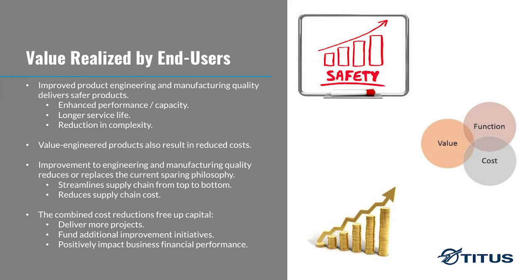For the last piece, talking about the value realized by end users — the number one thing is safety. When you have products that are properly engineered and manufactured under a rigorous QA system, the end result is products that are safer. You're going to have less uncertainty and fewer concerns, because some of this equipment operates at fairly high pressures. If it's not made right, it can hurt or kill people — and that, at the end of the day, is what everybody's focus should be.